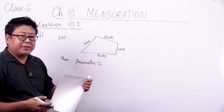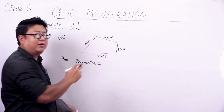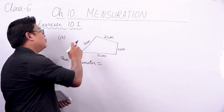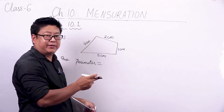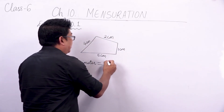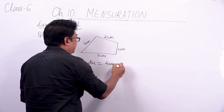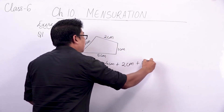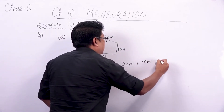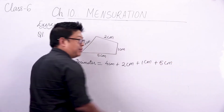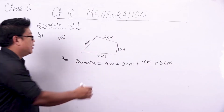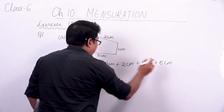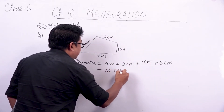We have already learned about perimeter. This figure — we do not have any specific name for it. So what we will do is simply add up all the sides. We will start from here: 4 cm, plus 2 cm, plus 1 cm, and finally plus 5 cm. When you add them together, you get 4 plus 2 is 6, plus 1 is 7, plus 5 is 12. So you have 12 cm.